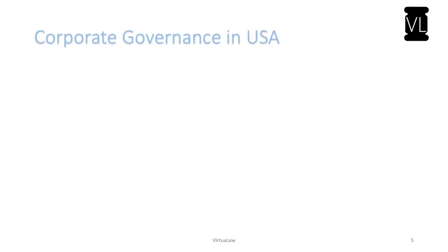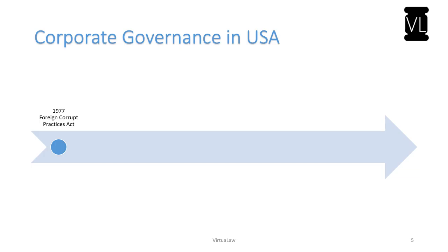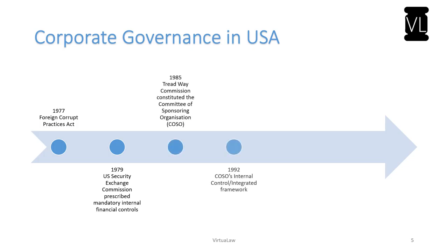Let us now discuss corporate governance in the USA. In 1977, the Foreign Corrupt Practices Act was enacted to ensure that an enterprise from the USA cannot engage in corruption or bribe government officials in any other country. In 1979, the US SEC made it mandatory for listed entities to comply with mandatory internal financial controls. In 1985, the Treadway Commission constituted COSO — the Committee of Sponsoring Organizations — which came up with an internal control integrated framework in 1992.